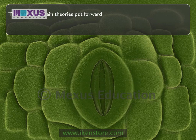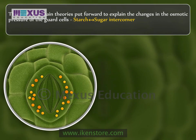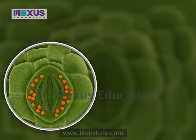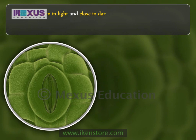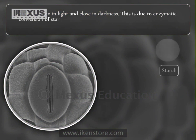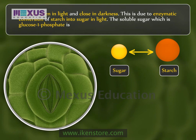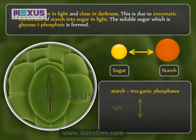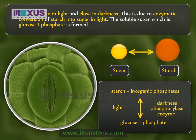There are two main theories put forward to explain the changes in the osmotic pressure of the guard cells: the starch-sugar interconversion theory and the active potassium ion transport mechanism. The stomata open in light and close in darkness. This is due to enzymatic conversions of starch into sugar in light. The soluble sugar, which is glucose 1-phosphate, is formed. While in darkness, in the presence of phosphorylase enzyme, glucose 1-phosphate is converted back into starch and inorganic phosphate.